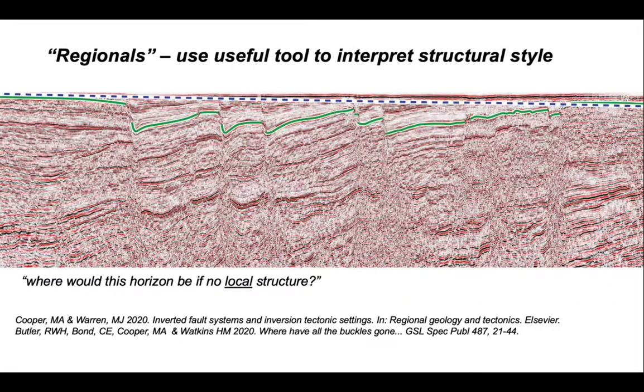So overall, then, regionals are great tools for interpreting the structural style in sedimentary basins. We're asking the question, where would a particular horizon be if there was no local structure? We're comparing the local structure with the long wavelength behavior of that horizon across the sedimentary basin.